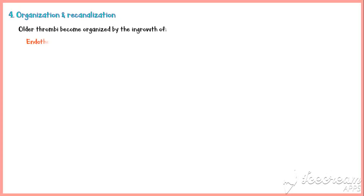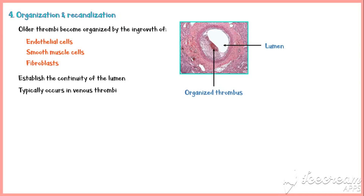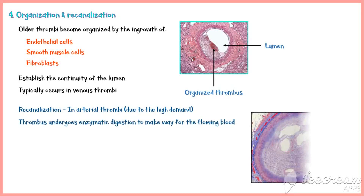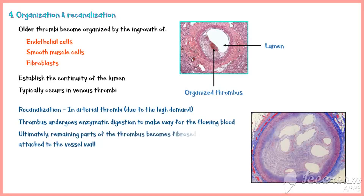Older thrombi resistant to fibrinolysis may undergo organization or recanalization. Organization occurs by ingrowth of endothelial cells, smooth muscle cells, and fibroblasts, ultimately establishing continuity of the lumen to variable degrees. Organization typically occurs in venous thrombi where blood flow is generally slow. Recanalization typically occurs in arterial thrombi where blood flow and demand is high — the thrombus undergoes enzymatic digestion to make way for flowing blood, and the remaining part becomes fibrosed and attached to the vessel wall.